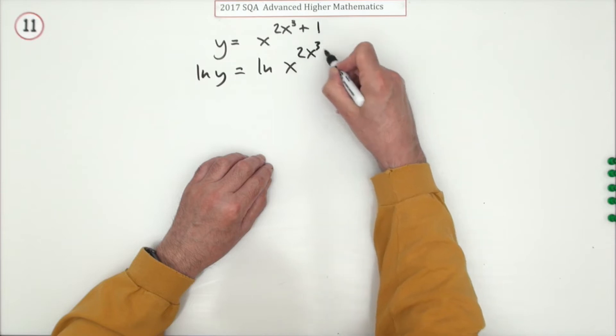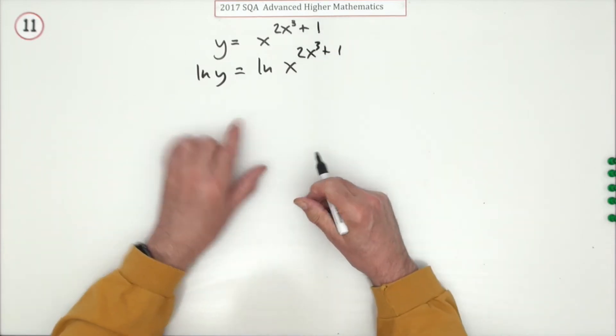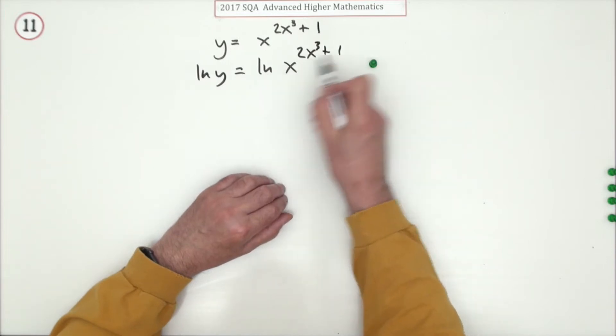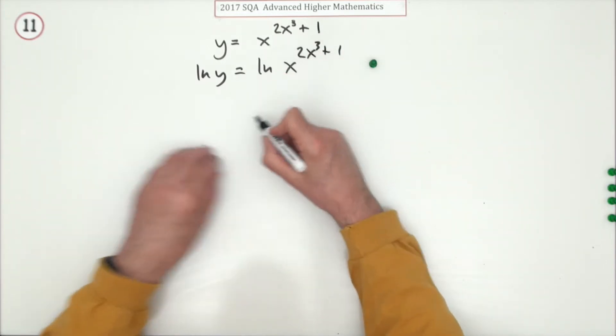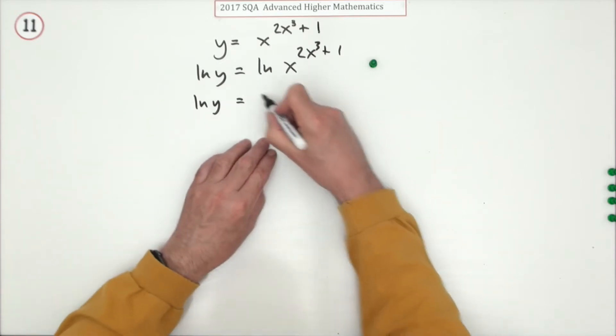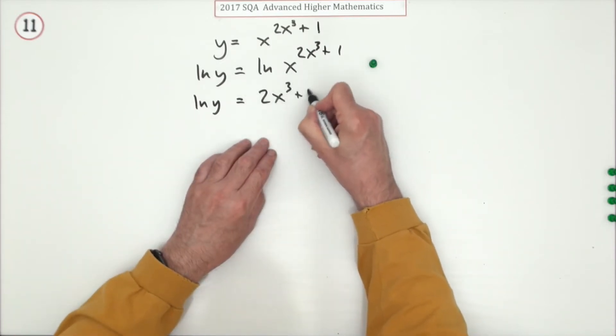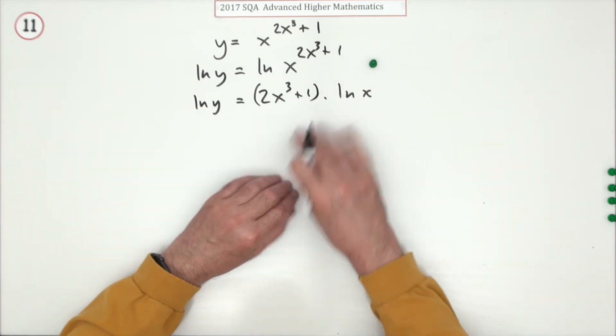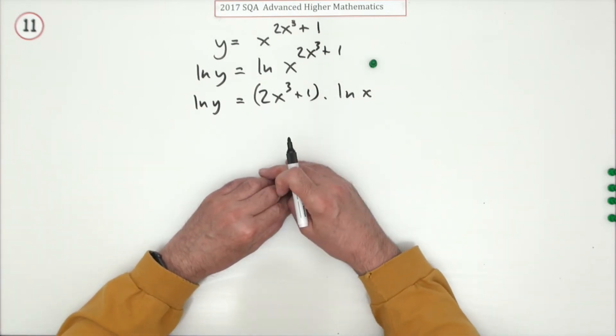ln of y is ln of x to the power 2x cubed plus 1, and doing that gets the first mark. Now the whole point of that is I can now pull out that power and pop it to the front, so ln of y is 2x cubed plus 1 times just ln of x. There's a wee product, I don't see a mark for doing that.